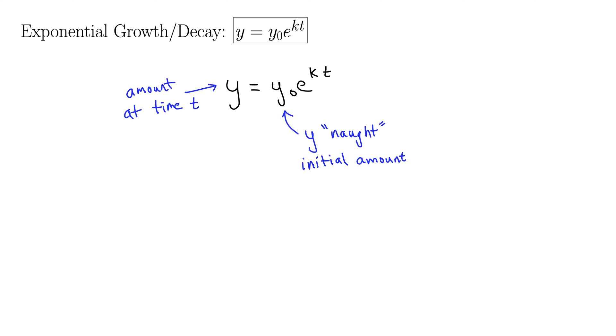Well, e is just the number e. k is the rate constant, and it's greater than zero for growth and less than zero for decay. And finally, t is time.